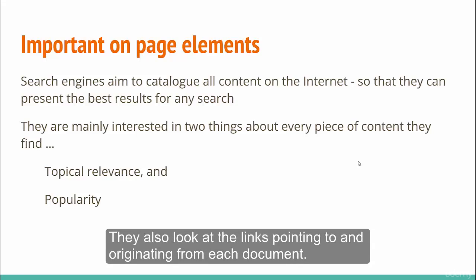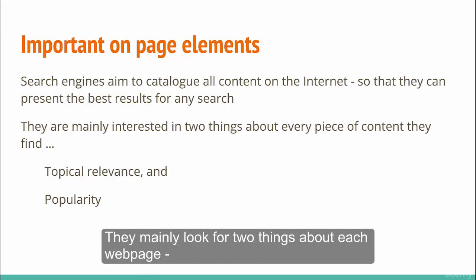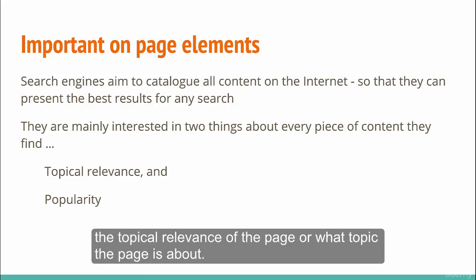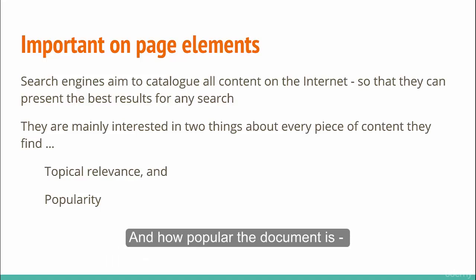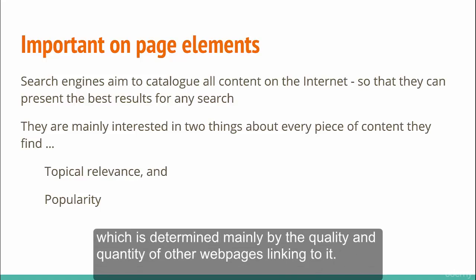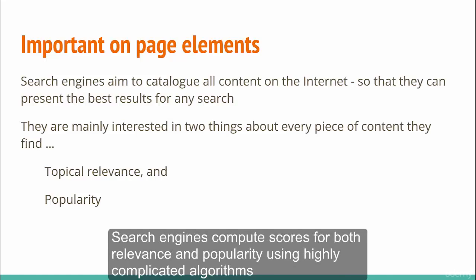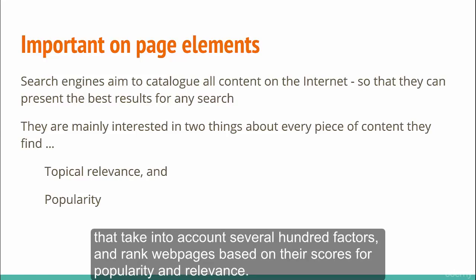They also look at the links pointing to and originating from each document. They mainly look for two things about each web page: the topical relevance of the page, or what topic the page is about, and how popular the document is, which is determined mainly by the quality and quantity of other web pages linking to it. Search engines compute scores for both relevance and popularity using highly complicated algorithms that take into account several hundred factors, and rank web pages based on their scores for popularity and relevance.